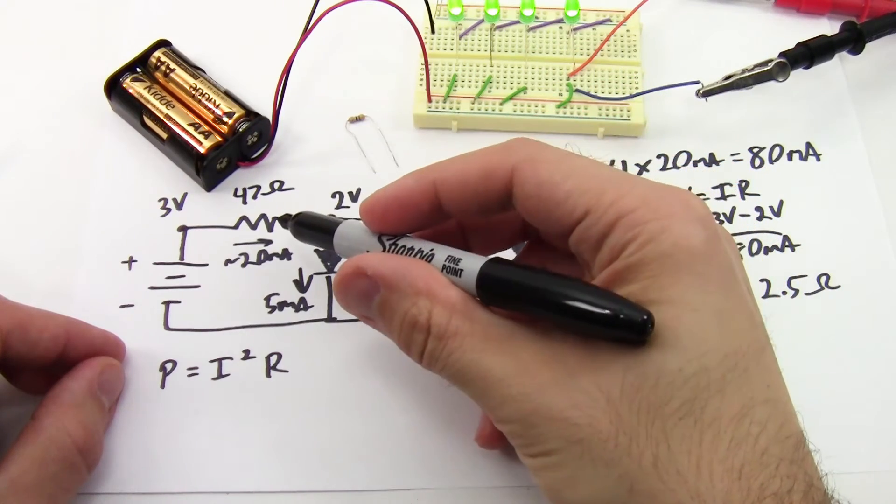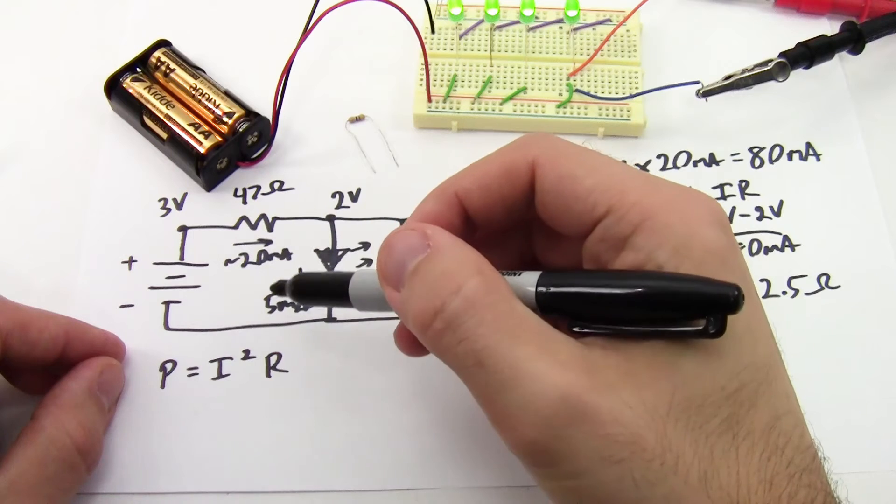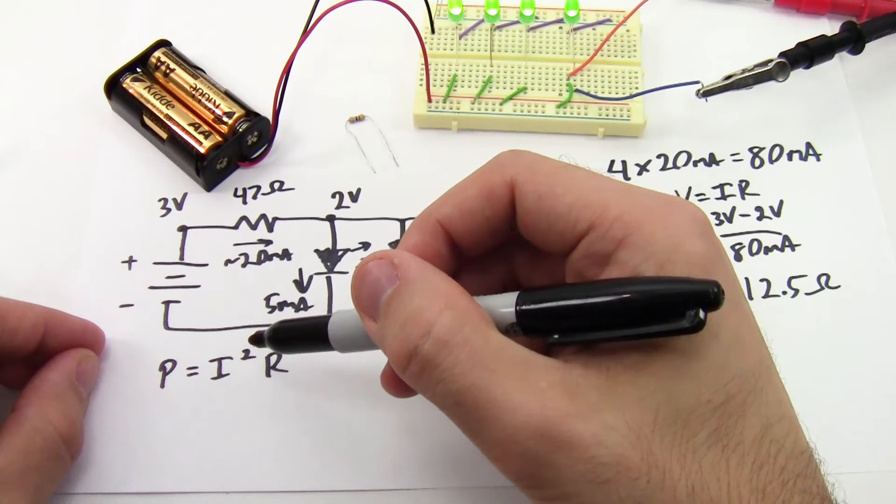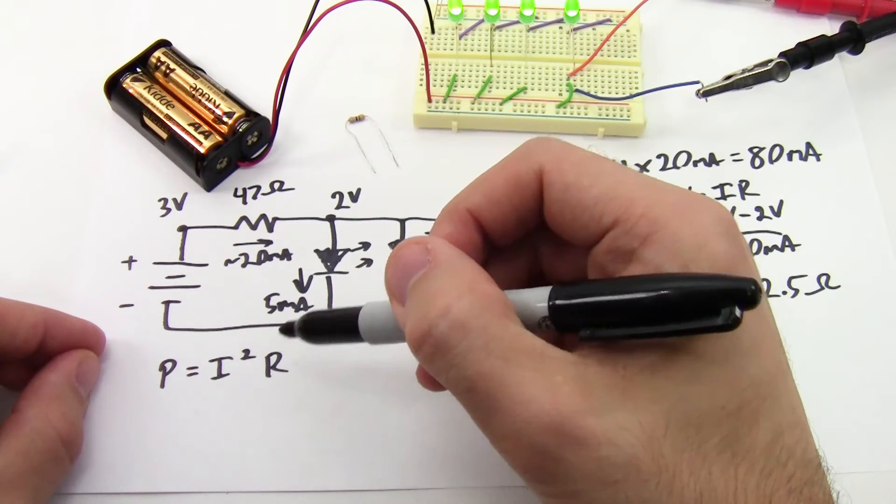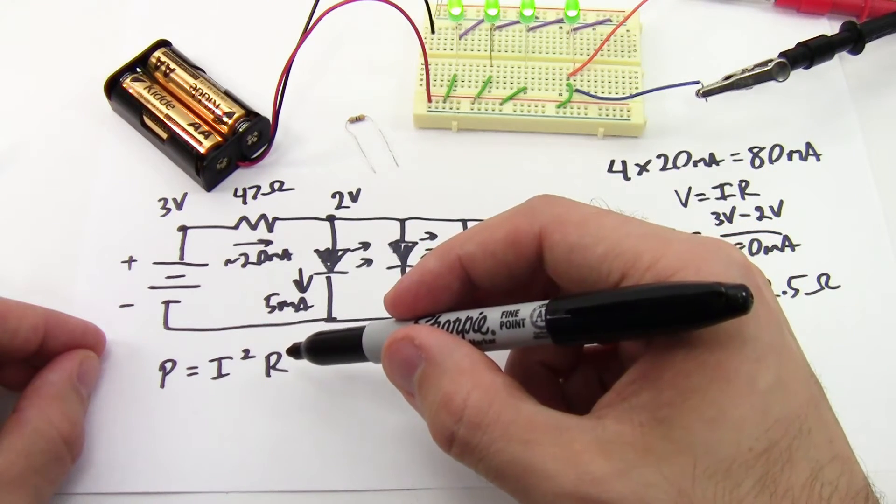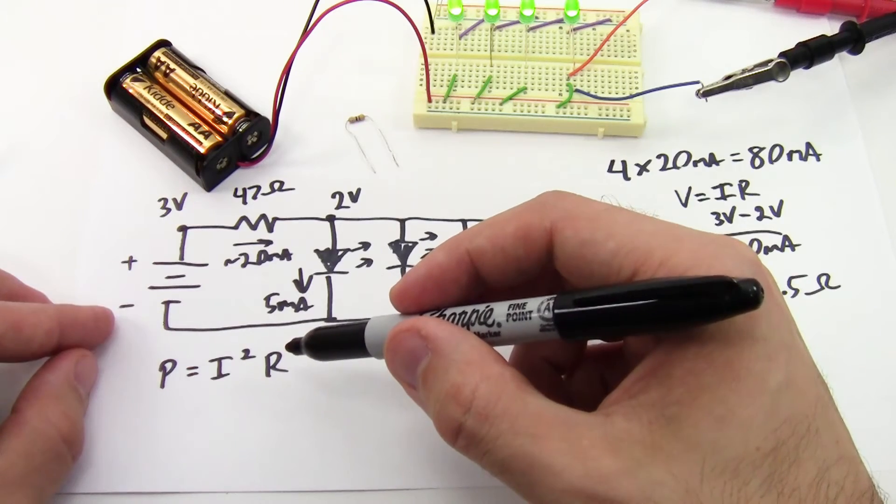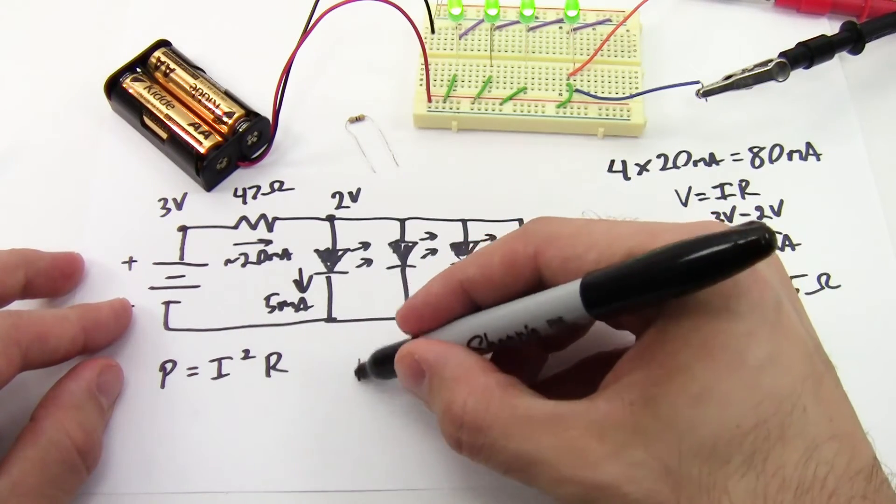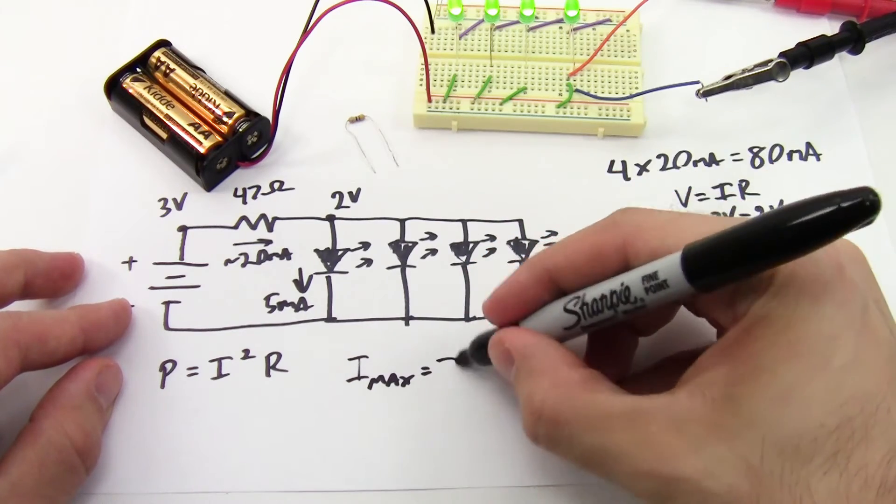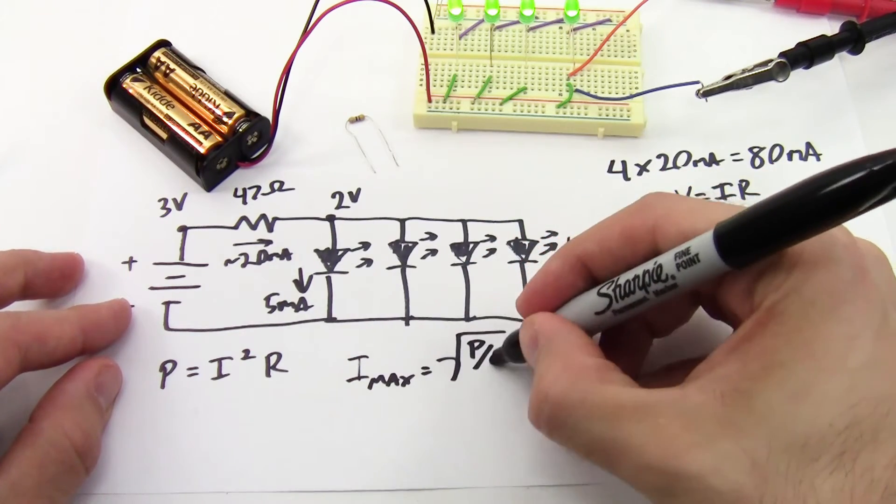Where I have to be careful here is with the power dissipated in this resistor. I know that for a resistor, the power dissipated is equal to the current squared times the resistance, or P equals I squared R. So if I know the power rating of the resistor, and I know the resistance, I can rearrange this equation to solve for the maximum allowable current, or I max equals the square root of P over R.